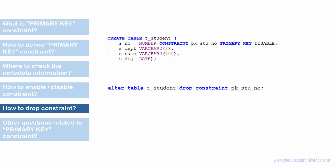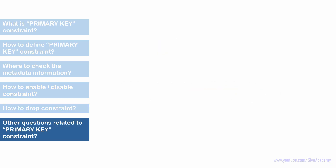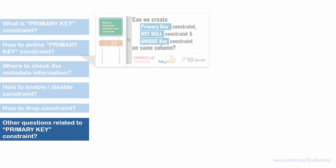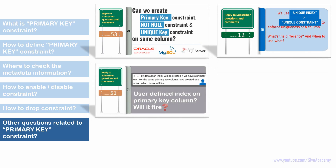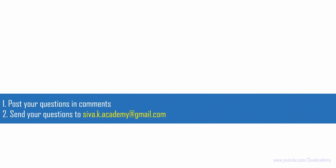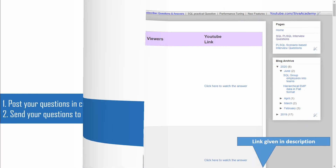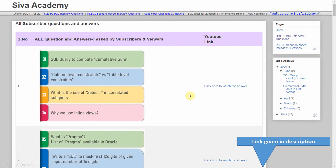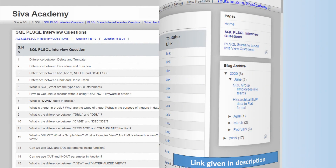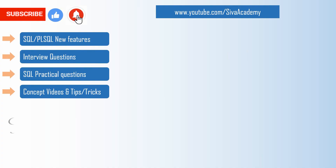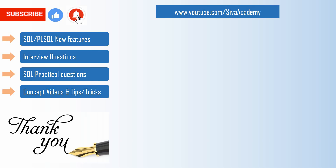To recap: we covered what is a primary key, how to define it, where to check the metadata information, and how to enable, disable, and drop a constraint. I have already covered related questions in previous videos — links will be in the description. If you want to learn about anything else, post it in the comments or send your questions to the mail ID given. Check whether a similar question has already been covered in the interview question or subscriber question series. If not, write back and I will be happy to record a new video. If you learned something new, please like, subscribe, and stay tuned for new videos. Thanks for watching!